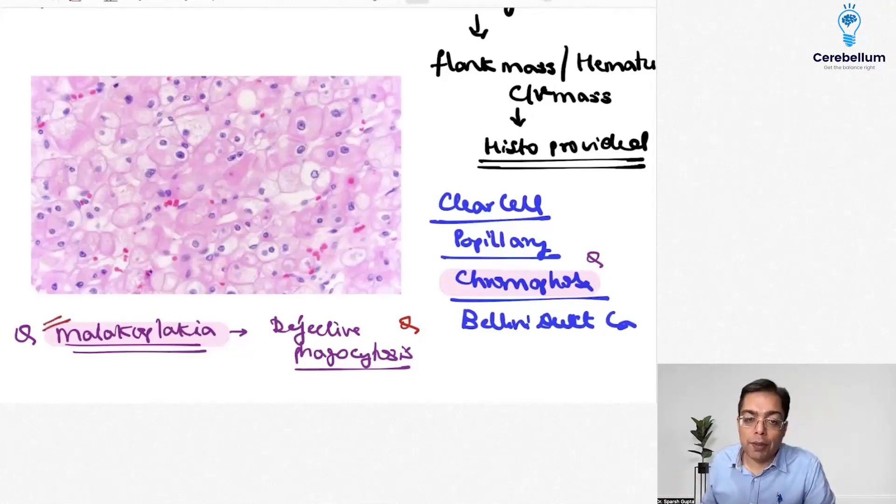Earlier exam questions had been asked with respect to the Michaelis-Guttman body and the von Henschman cells but this time the question was on defective phagocytosis and of course the plaque-like lesions.